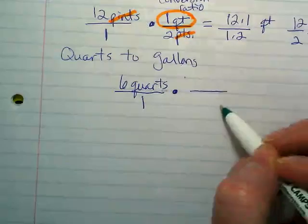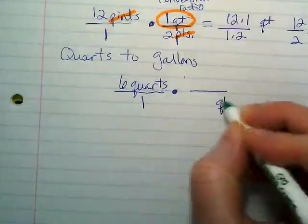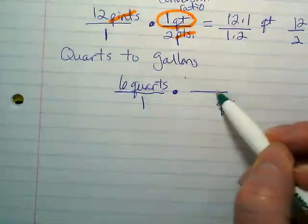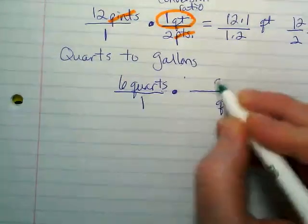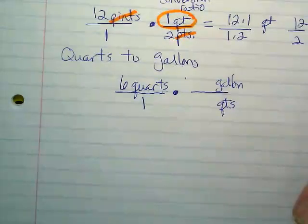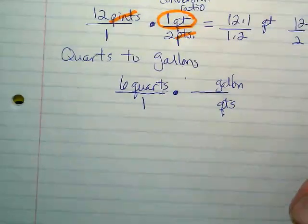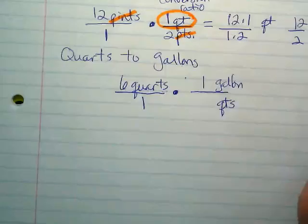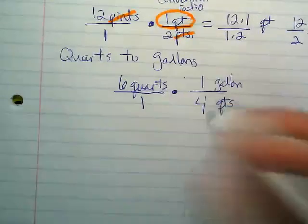And if I'm converting from quarts to gallons, that means the gallons has to be on the top. You're kind of mapping out your problem as you go. And then you put in the facts that you know about the numbers. In one gallon, there's four quarts.